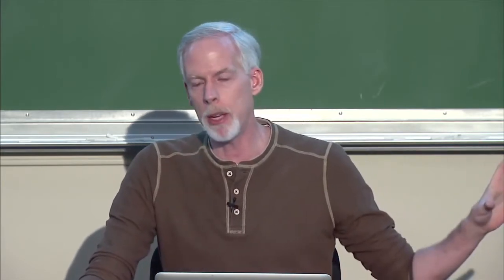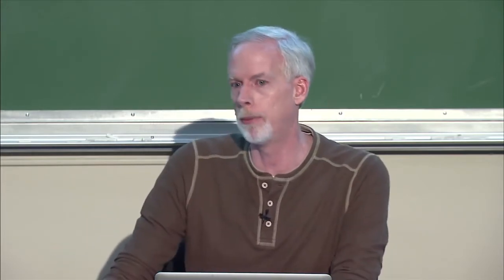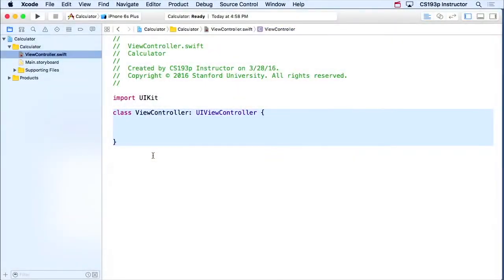Now in our model, where it's UI independent, we're gonna probably be importing Foundation. Foundation is that core services thing — we might be doing networking and databasing in our model, but we're not doing buttons and stuff. So those are the two main things you import. Here is the definition, or declaration really, of a class in Swift.